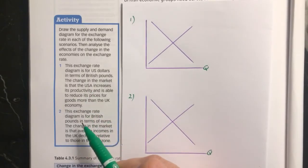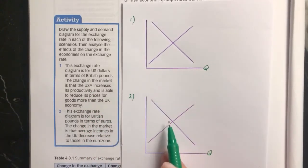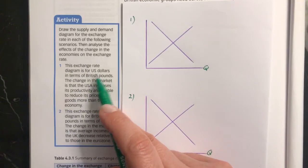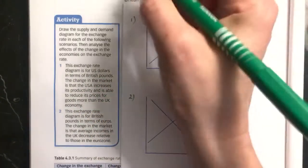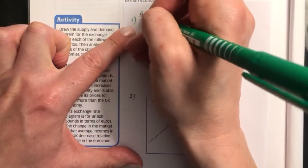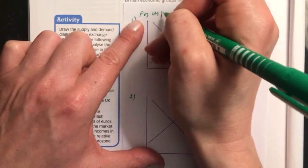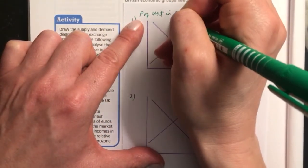Now we're going to look at these two questions about exchange rates, and each of them we need to draw a demand and supply diagram for. The first one, this exchange rate diagram is for US dollars in terms of British pounds. So firstly, you need to write up here: price of US dollars in pounds.